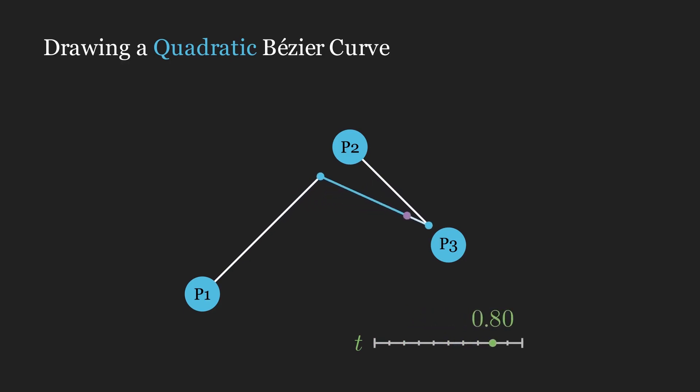Something like this. Doing this for every value of t will form a smooth Bezier curve.